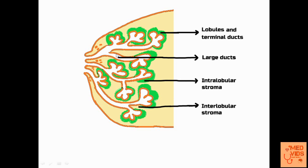The lactiferous duct is lined by two layers of epithelial cells. Within the lumen, the lining layer of epithelium is called luminal epithelium, and just under it are what are called myoepithelial cells. These myoepithelial cells are very important in ejecting milk out of the breast, as their contraction facilitates ejection of milk during feeding.